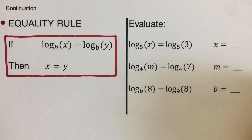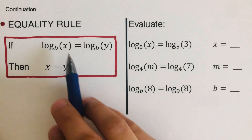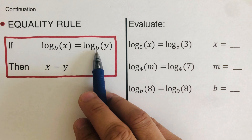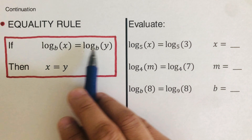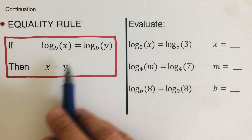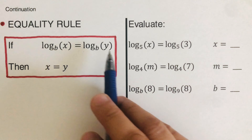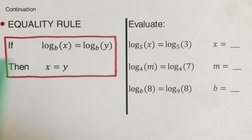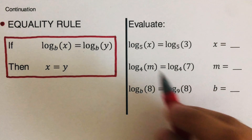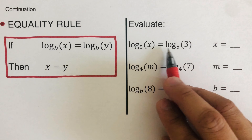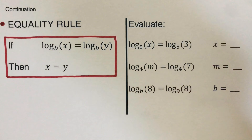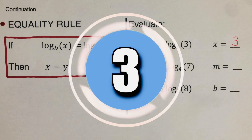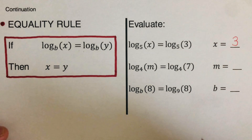Now let's look at the equality rule. If log of x to the base b equals log of y to the base b, and both logarithmic expressions have the same base b, then x equals y. For example, log of x to the base 5 equals log of 3 to the base 5. Since both bases are 5, x equals 3.